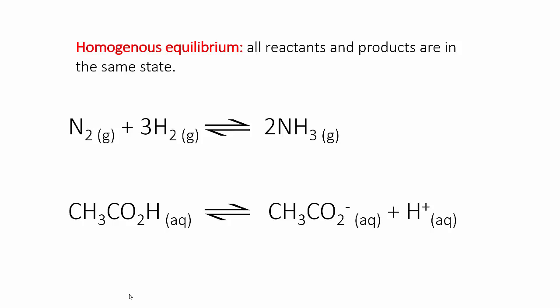Notice that I've written these chemical equations using an equilibrium arrow. That's two single-headed arrows pointing in opposite directions. This is used to represent the fact that both the forward and reverse processes are happening simultaneously.